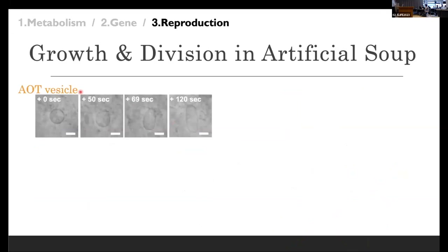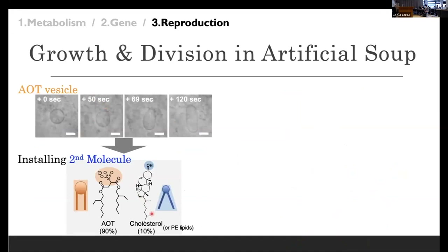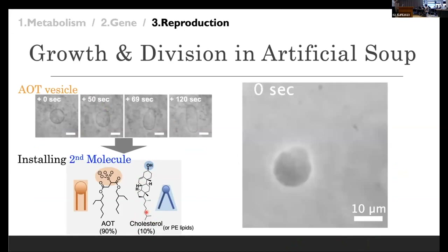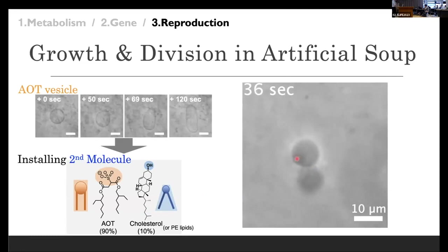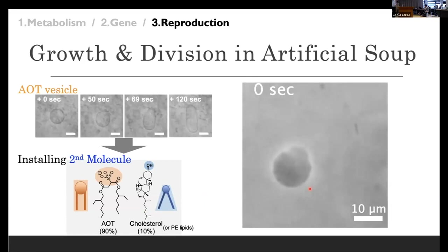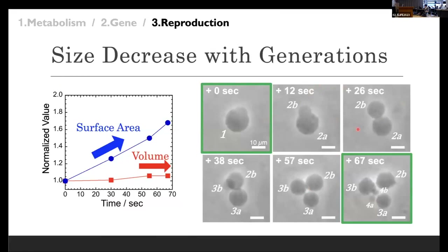Toward the AOT single-component vesicle membrane, I implemented a second membrane molecule — 10% cholesterol — which has a very small head group and bulky tail group. With this, in response to the supply of food molecules, I could succeed in constructing the spontaneous membrane growth, deformation, and division. This is the initial mother vesicles. Coupled with the artificial metabolism system, they show spontaneously generated daughter vesicles, and again another daughter vesicles, and again multiple smaller daughter vesicles.